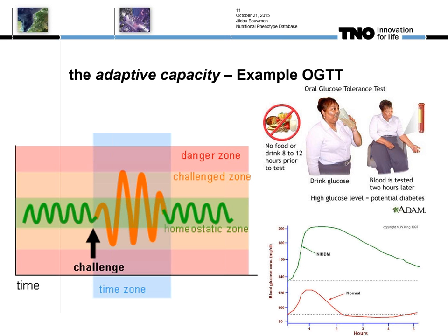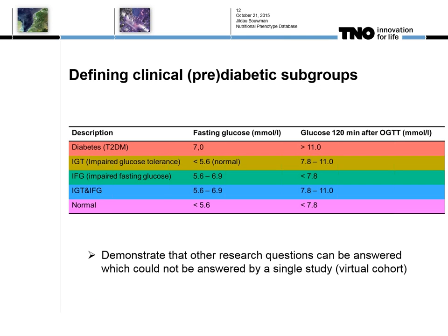Putting data in is nice, but it's even more useful to get it out and combine studies. We have computer access to the system, especially for data integration — it's better to do the integration in statistical packages like R. We also have ways to look at data within the application, mainly focused on simple analysis and visualization such as simple plots. You can search for specific studies, export your data to Excel, and use visualization possibilities.